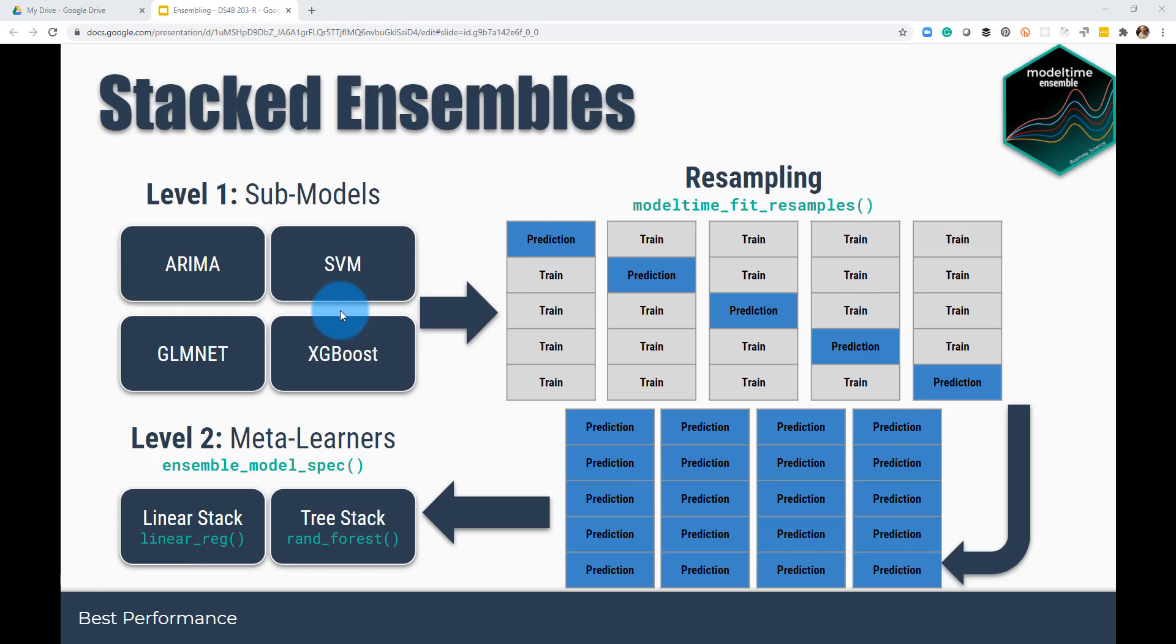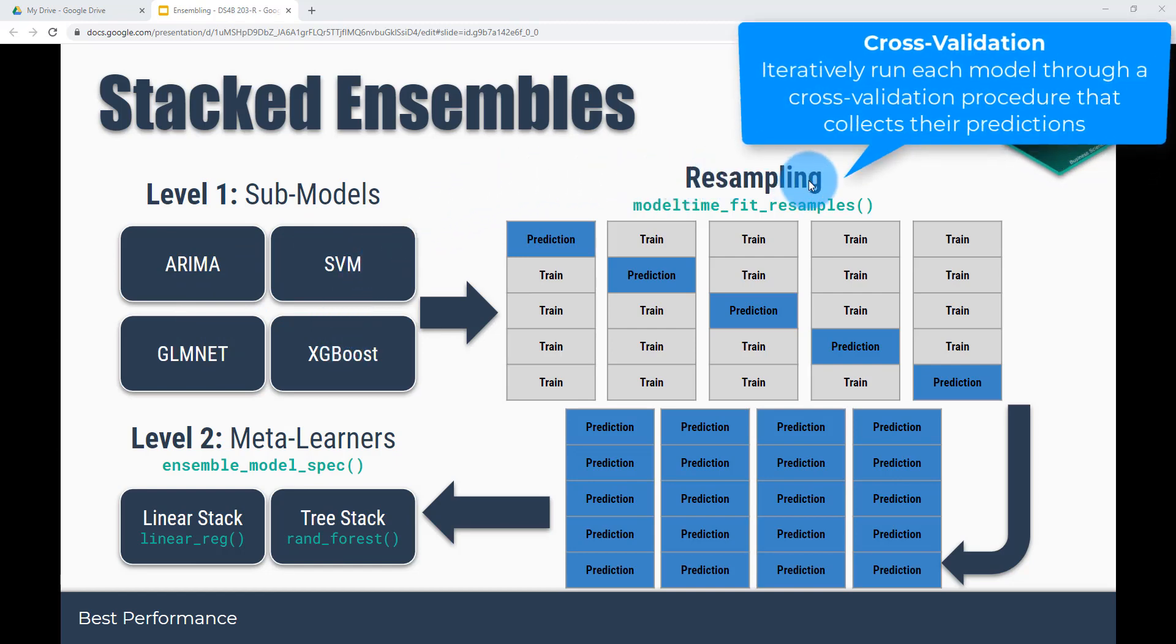So to dive in a little bit more about how stacked ensembles work, because it's a little bit confusing if you're first learning it. So if you think about this, you've got sub-models. So if we have a model time table where we have four sub-models, an ARIMA, a GLMnet, a support vector machine, and an XGBoost, what we can do is we can perform what's called resampling.